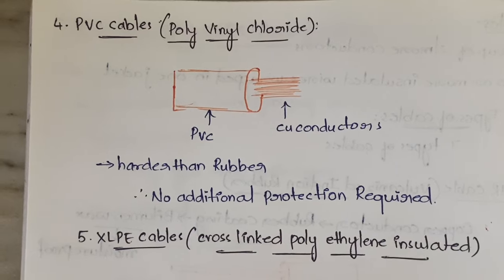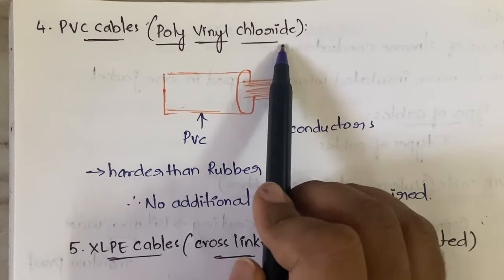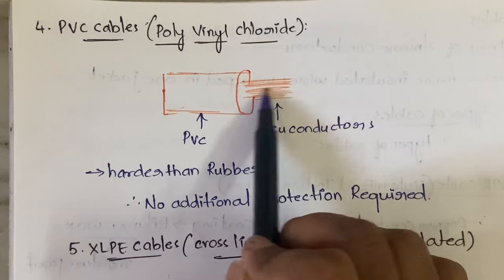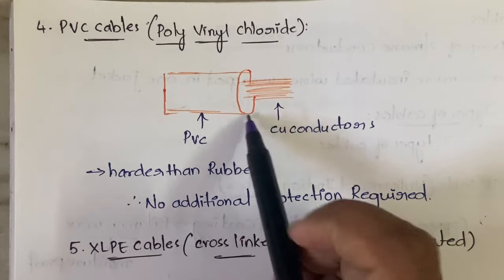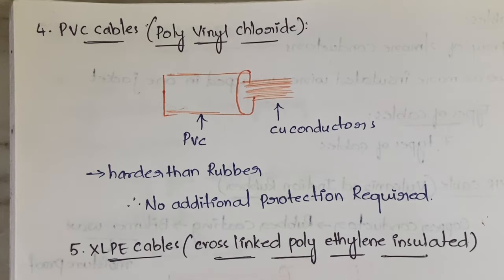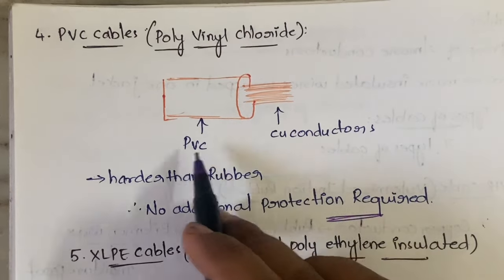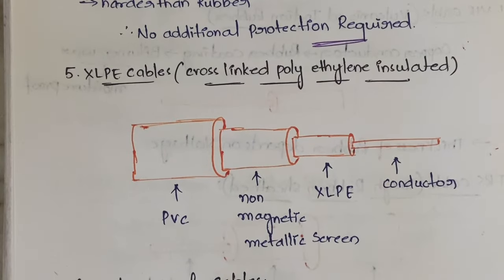The fourth type is PVC cable — Polyvinyl Chloride. Here you will have copper conductors coated with PVC. No additional protection is required because PVC is harder than rubber and provides protection against moisture, water, heat, and everything.